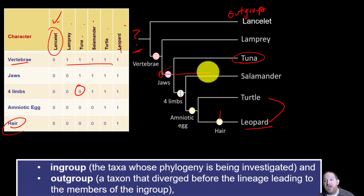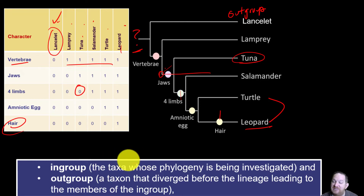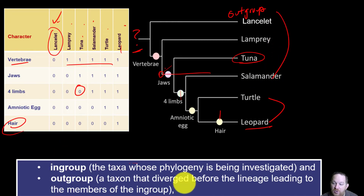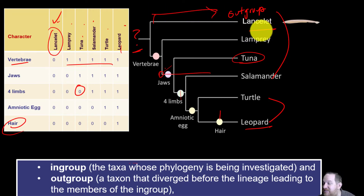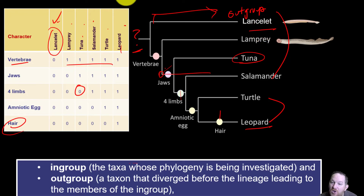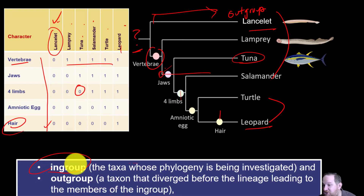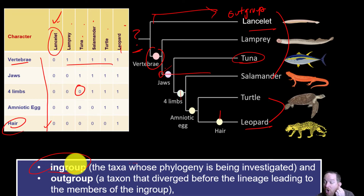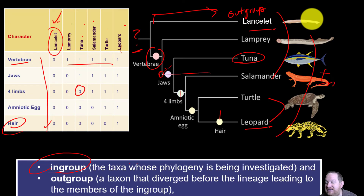The in-group is the group — the taxa — whose phylogeny is being investigated. The out-group is the one that diverged before the main lineage really started. So the out-group in this case is the lancelet. These others are technically in the in-group, because we've started with the vertebrae. Vertebrae is really where we're starting on this chart — everything after that is in the in-group. And of course tuna, salamander, turtle, and leopard all have the vertebrae, so these would be considered the in-group. That lancelet is the out-group.